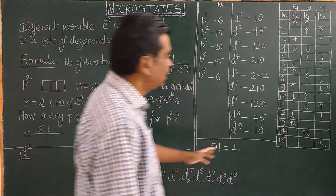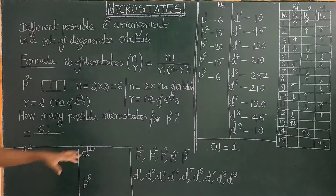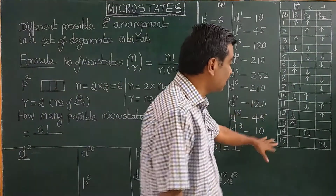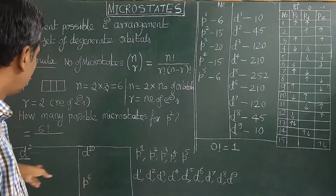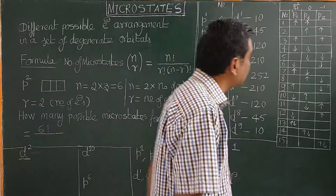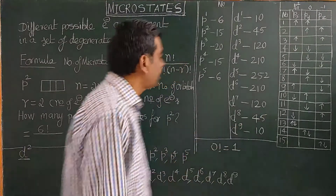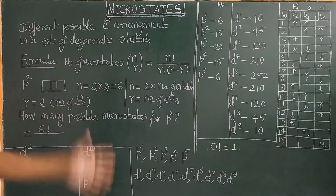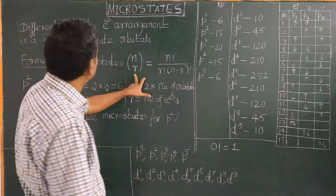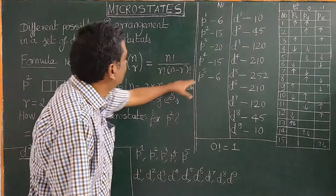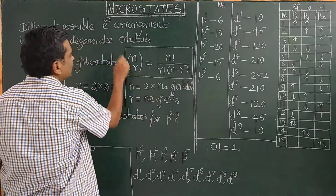What is the formula? For D2 configuration, how many microstates are possible? There are 45. There are 45 different possible electronic arrangements in five degenerate d orbitals of slightly different energy. There is a formula given by permutation combination rules. Using this formula, one can calculate the number of microstates.